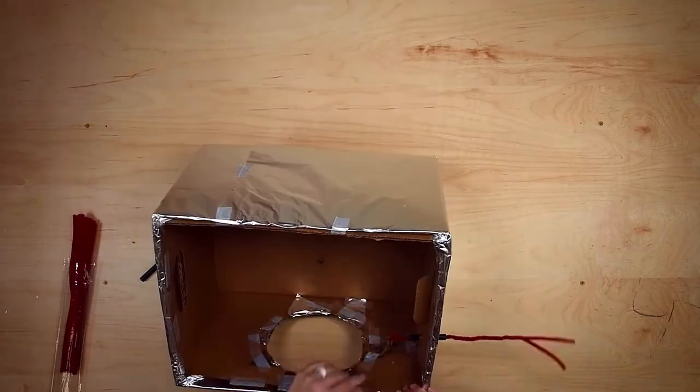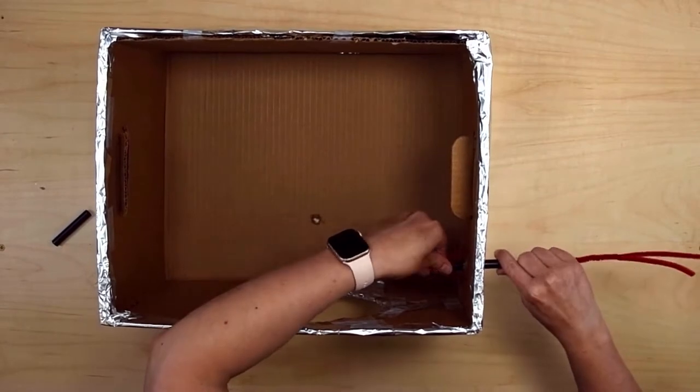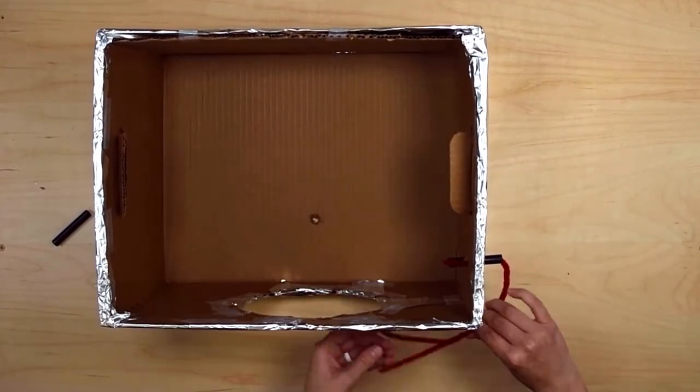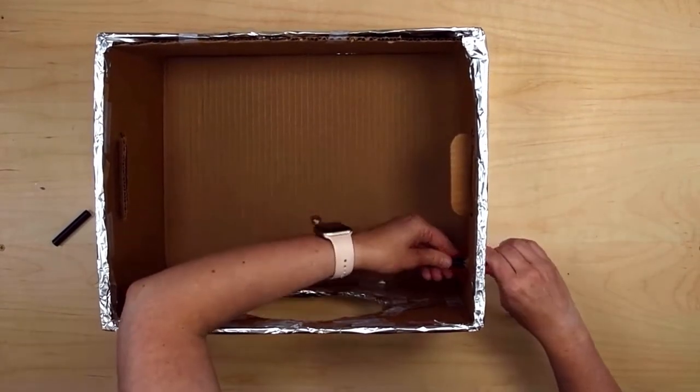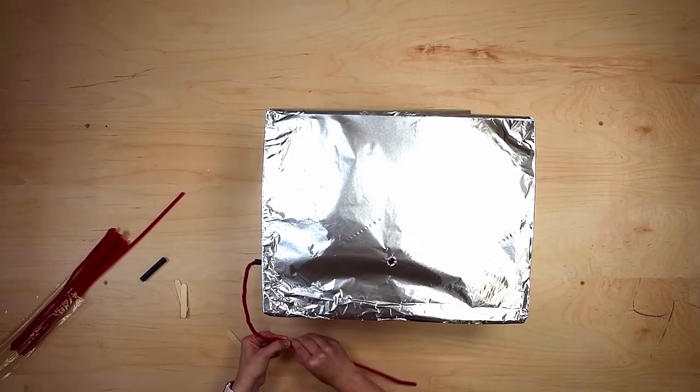I'm folding down the pipe cleaner to test to see if my antenna will reach the circular face hole. Unfortunately, it looks like it's a little bit short. I'm going to add two extra pipe cleaners to the end, so that I can make it a little longer since my box is so big.